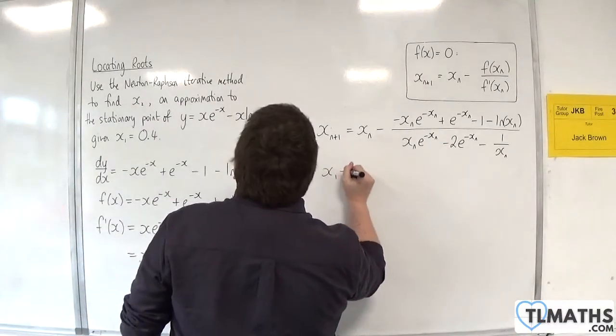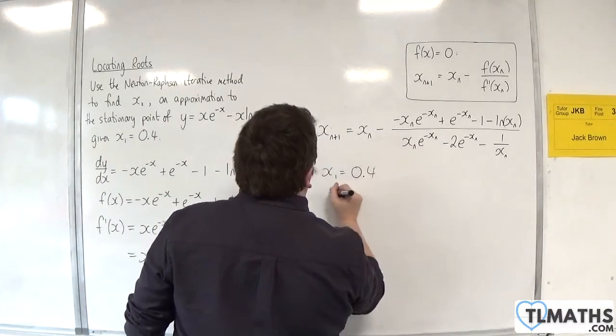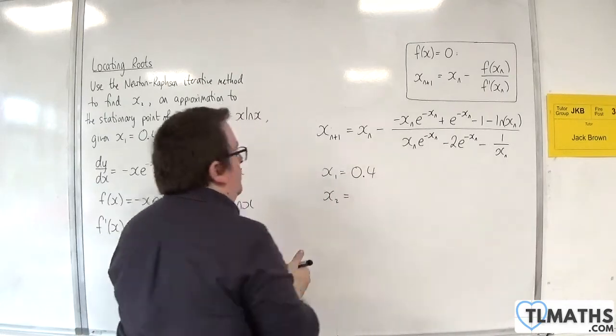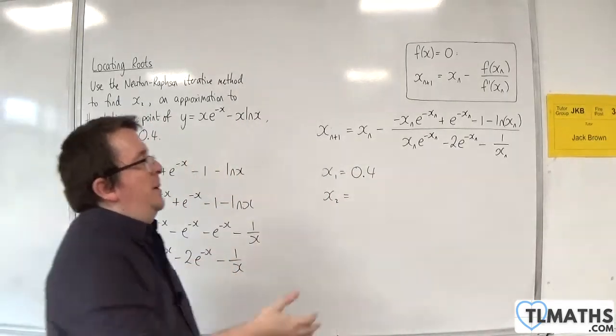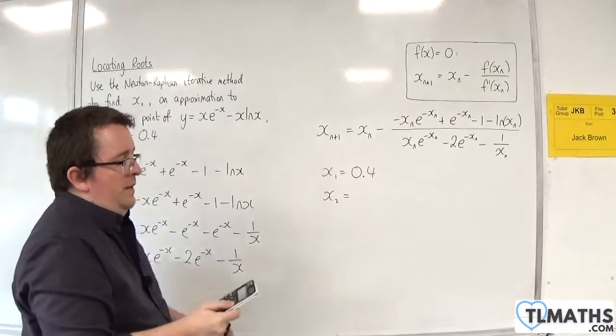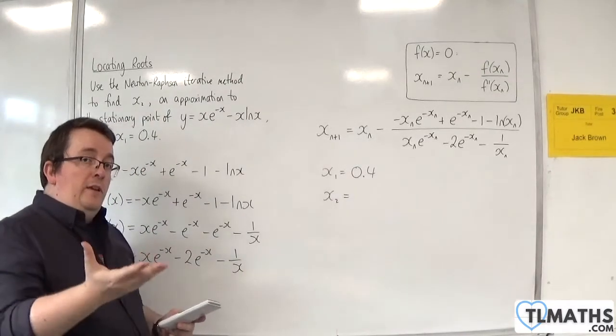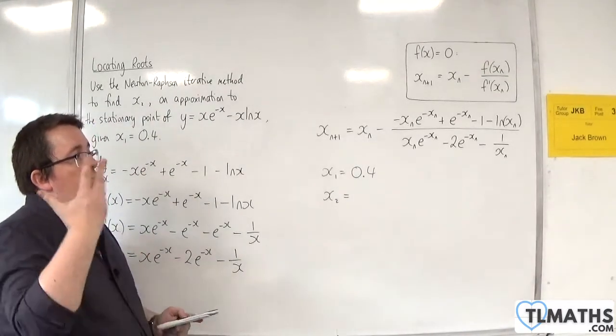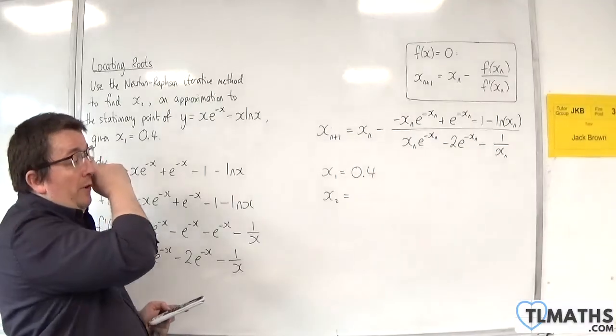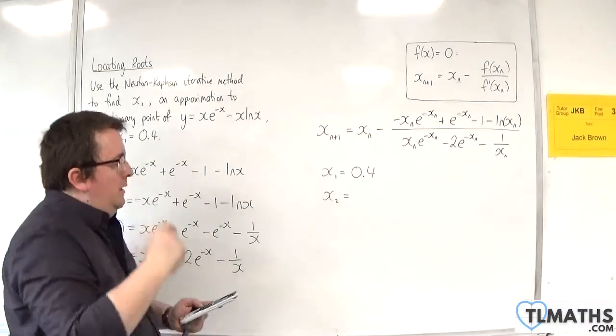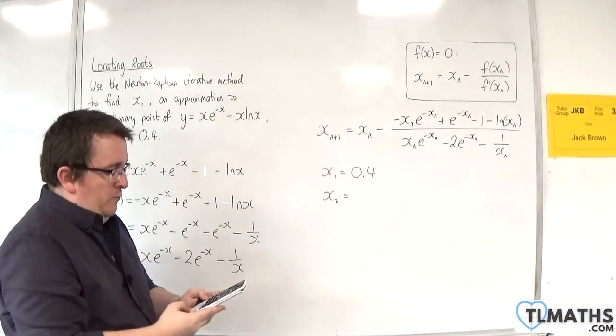So x1 is 0.4. What is x2? So I essentially need to substitute 0.4 into this. Now I'm going to use this using the answer key. The reason being is that then I can check my result afterwards. So I'm going to put in 0.4 first, press equals.